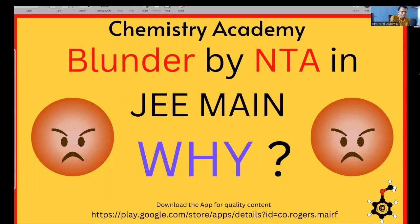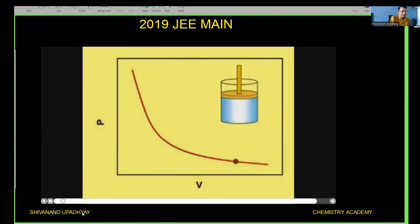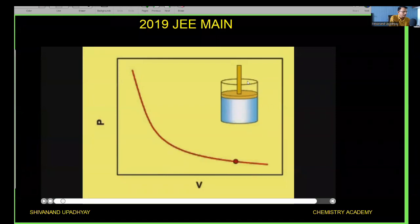This question is based on work done in isothermal reversible expansion of an ideal gas, which is a very common and simple question. There is an animation based on isothermal reversible expansion of an ideal gas. If we draw a pressure versus volume graph it is a rectangular hyperbola. If we decrease the volume the pressure increases, and if we increase the volume the pressure decreases.